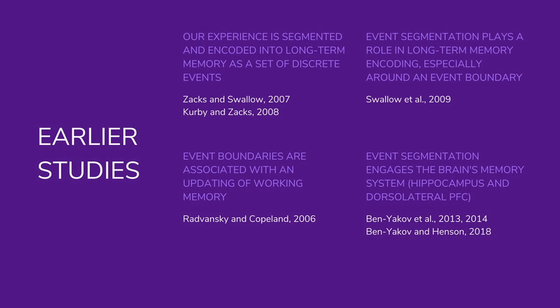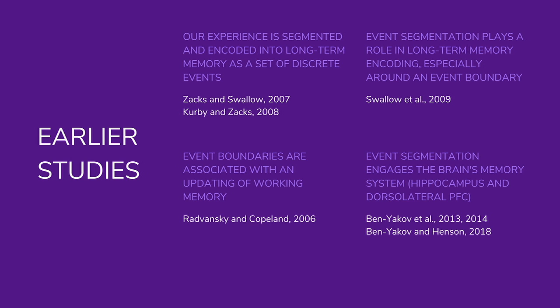Conceptual closure is essentially a closure of one episode and a switch to another. Several related studies show that our experiences are segmented and encoded into long-term memory as discrete events — not as a continuous stream, but as chunks, each with a beginning and an end. Event segmentation plays a role in long-term memory encoding especially around event boundaries, also known as the primacy and recency effect.